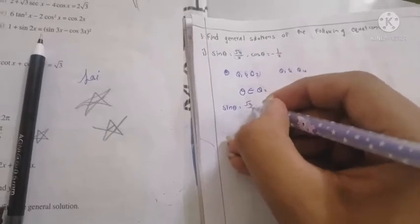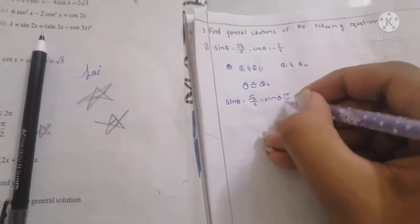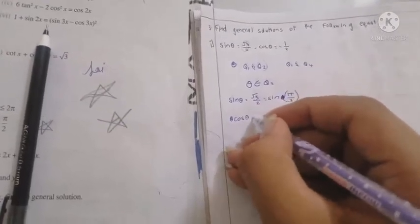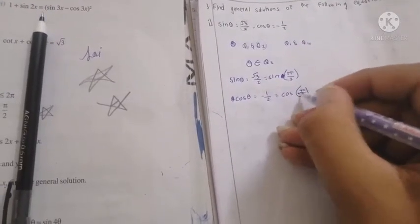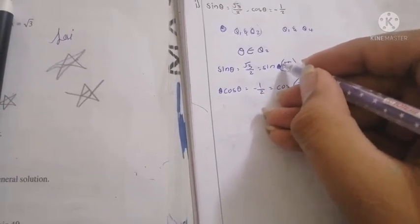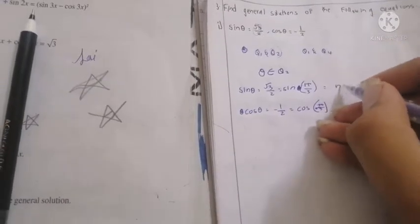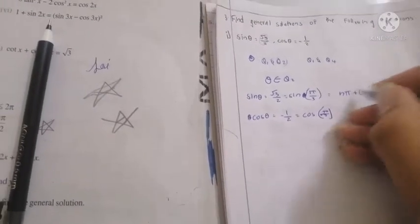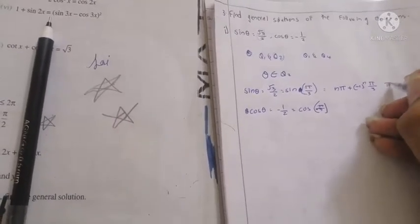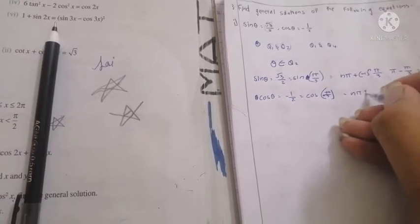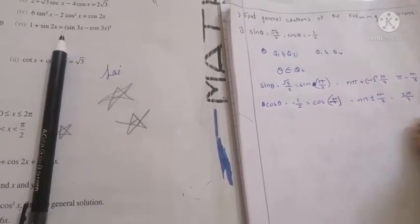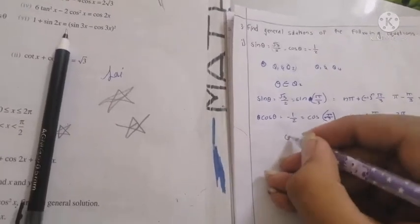sin(π/3) = √3/2 and cos(π/3) = 1/2, so cos(-π/3) or using the second quadrant formula: substituting n=1 in nπ + (-1)ⁿ(π/3) gives π - π/3 = 2π/3. Both equations give θ = 2π/3, so the principal solution is 2π/3.